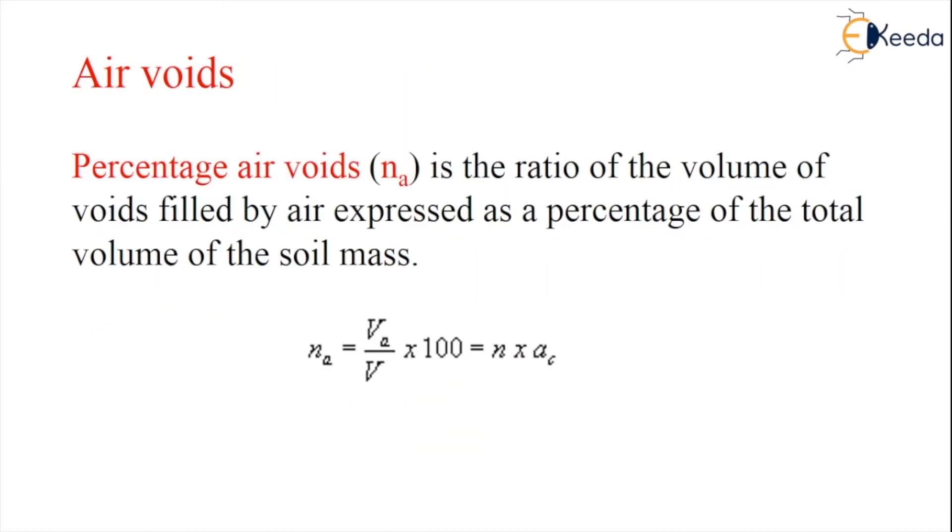Coming to the next topic, air voids. Generally it is expressed as a percentage of air voids and is denoted by NA. It is a ratio of the volume of voids which are filled by air expressed as a percentage of the total volume of the soil mass. NA equals VA by V, and is expressed as a percentage, hence we multiply by 100.